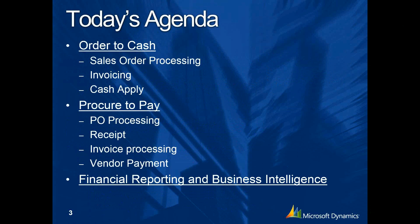We'll cover procure to pay — what a small business needs: purchase orders, the ability to process POs and receive both inventory and non-inventory POs, process an invoice from a vendor, and then pay a vendor. And finally, we'll wrap it up with financial reporting and business intelligence.